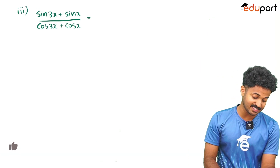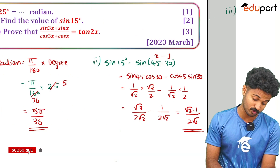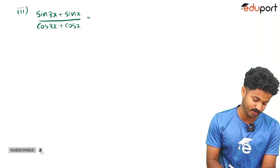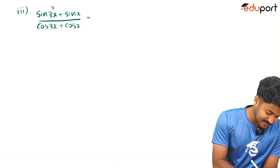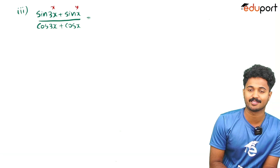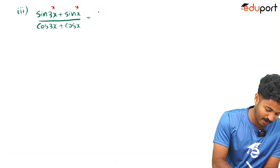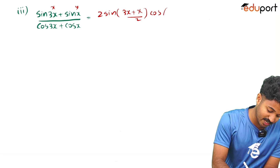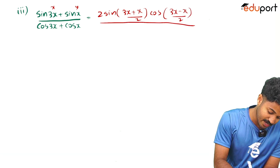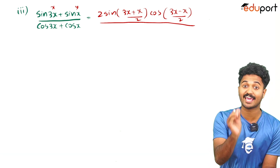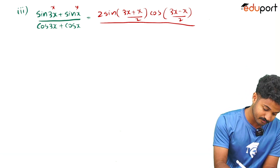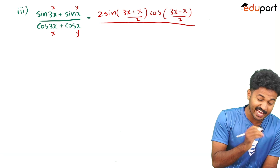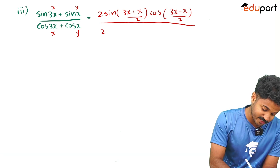Next question: simplify (sin3x + sinx)/(cos3x + cosx). We use the sum-to-product formula: sin x + sin y = 2·sin((x+y)/2)·cos((x−y)/2). Applying it to the numerator with 3x and x.